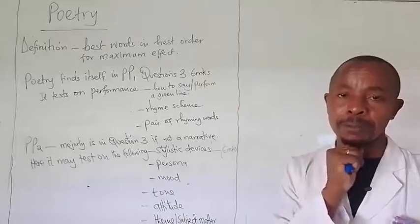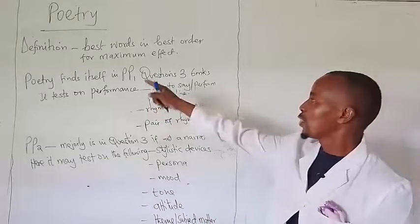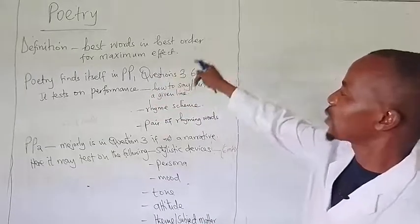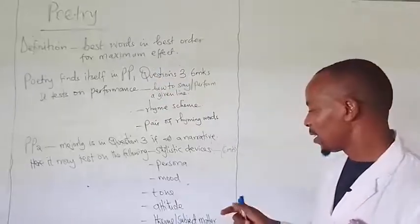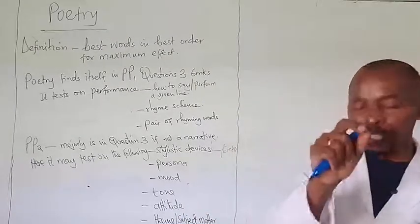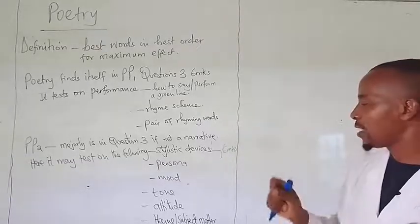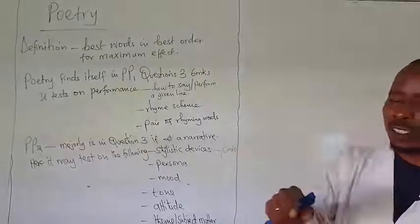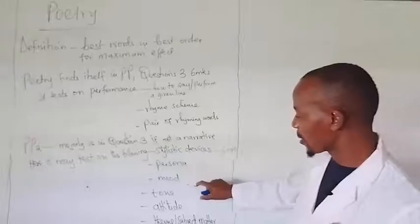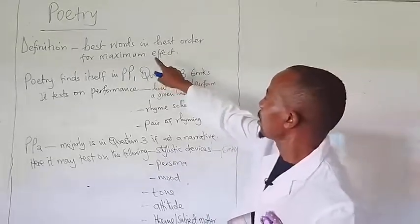Themes or the subject matter in a poem — how do you get the subject matter? A poem, from the definition of best words in best order for maximum effect, is a poetic work whose structure is stanzas, unlike prose where we have paragraphs. These stanzas are compressed. That's why we talk about maximum effect by use of the best words in their best order.